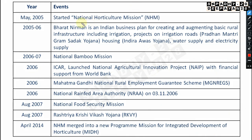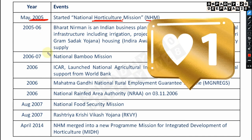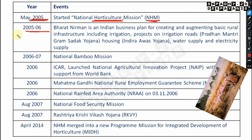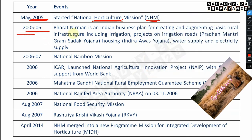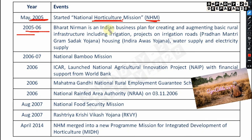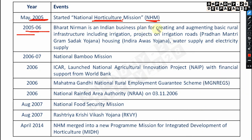The National Horticulture Mission (NHM) is very important — may come in AAO and other exams. NHM was started in May 2005. From 2005 to 2006, Bharat Nirman — an Indian business plan for creating and augmenting basic rural infrastructure including irrigation, roads, housing, water supply, and electricity — was implemented.